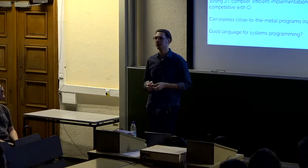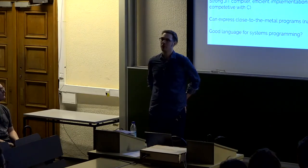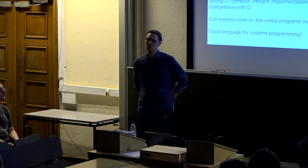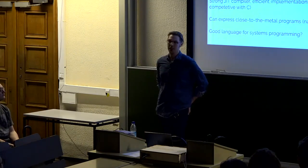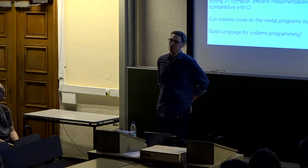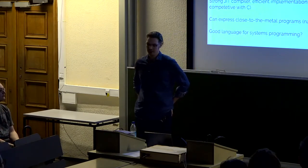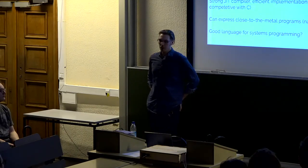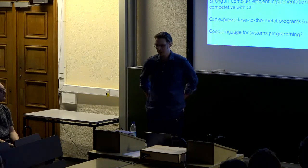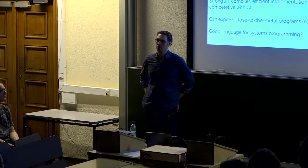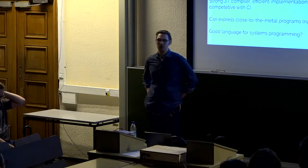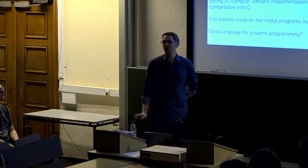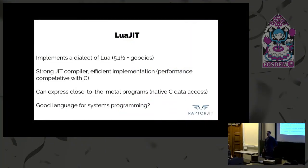LuaJIT is an alternative implementation of Lua. It implements a dialect of Lua 5.1-and-a-half-ish plus some extra goodies — that's why I'm saying it's a dialect, not just an older version. As its name suggests, it comes with a just-in-time compiler, and that compiler is really impressive and achieves performance competitive with C. It's also a really good language for expressing programs close to the metal, thanks to built-in language support for accessing and operating on C data. I personally think LuaJIT is a good systems language — good enough to replace C.